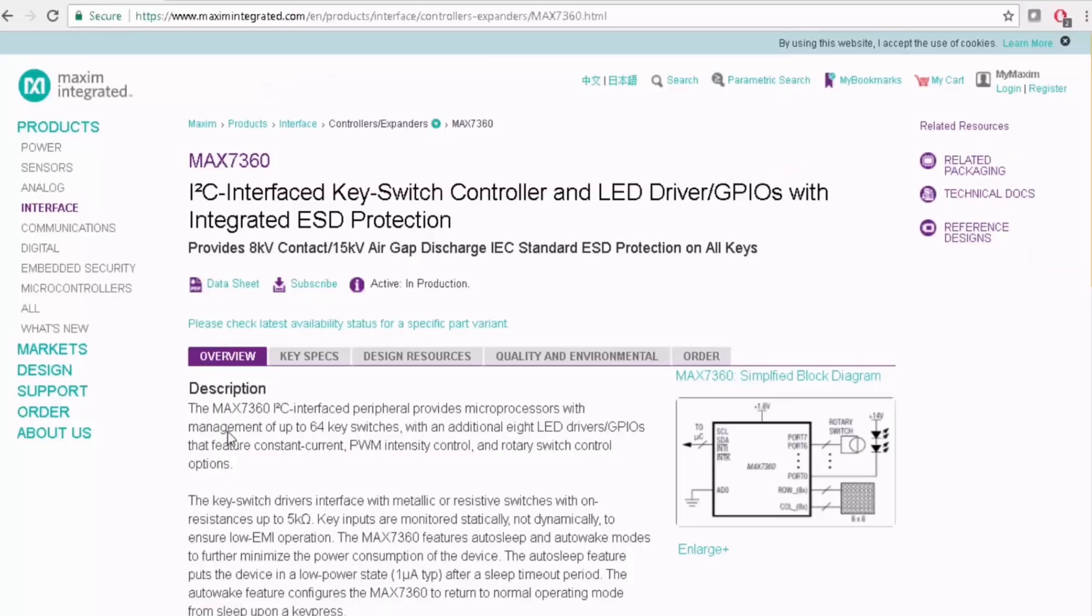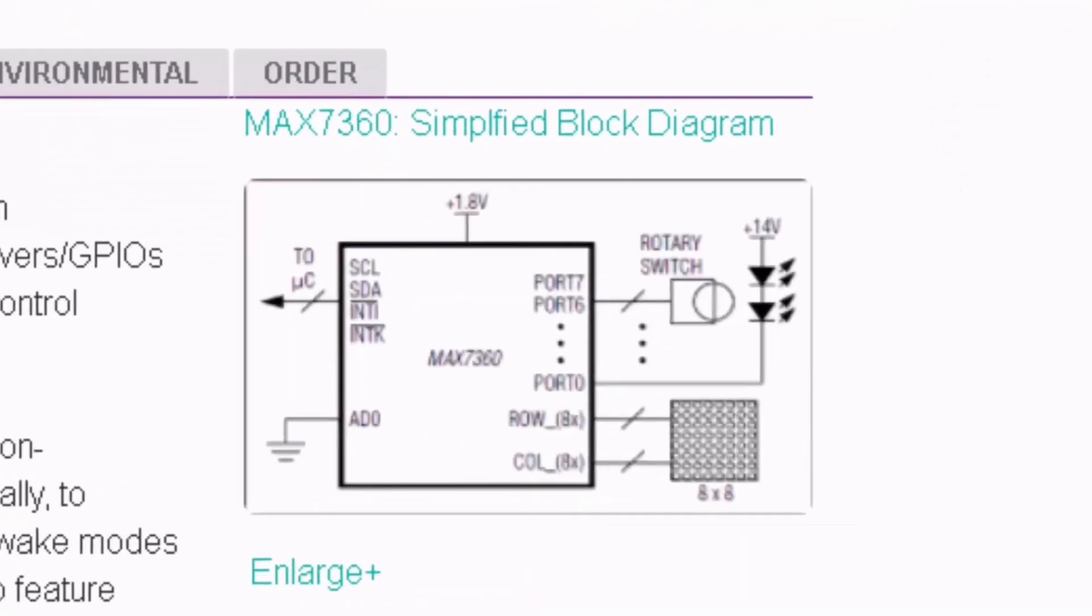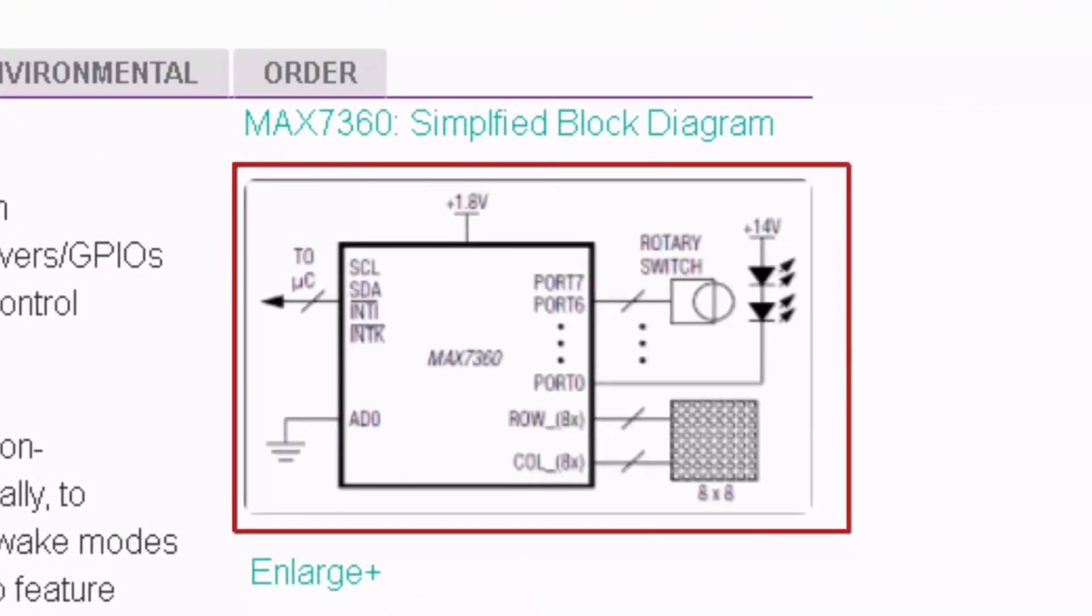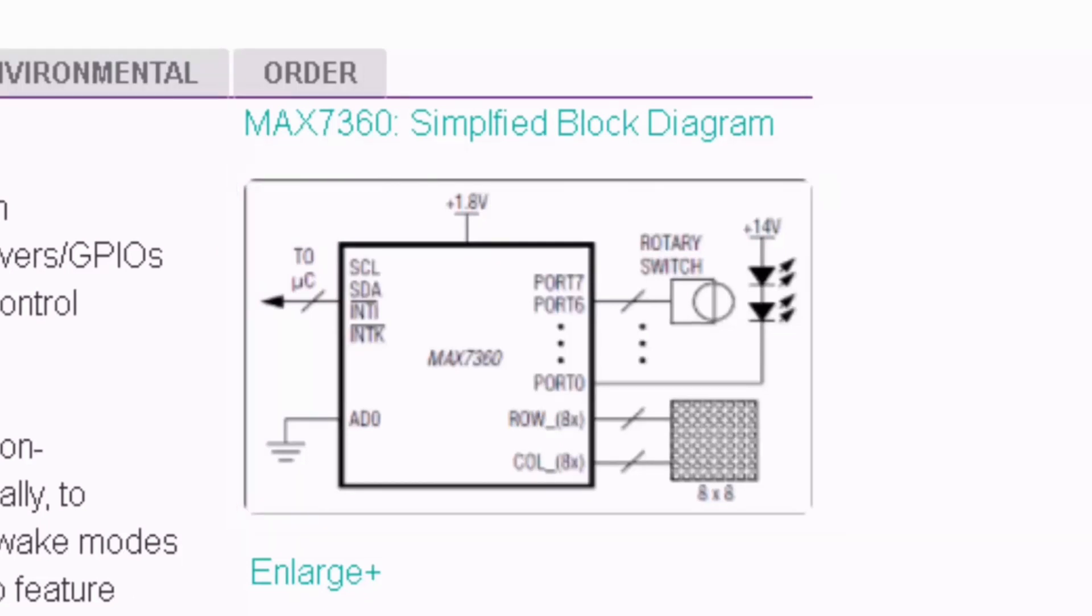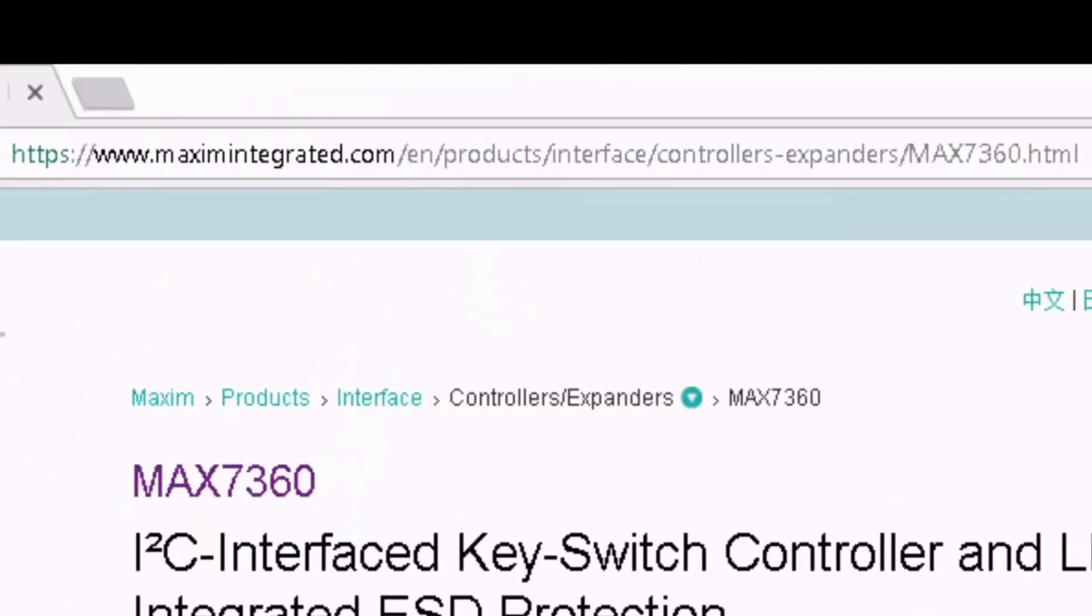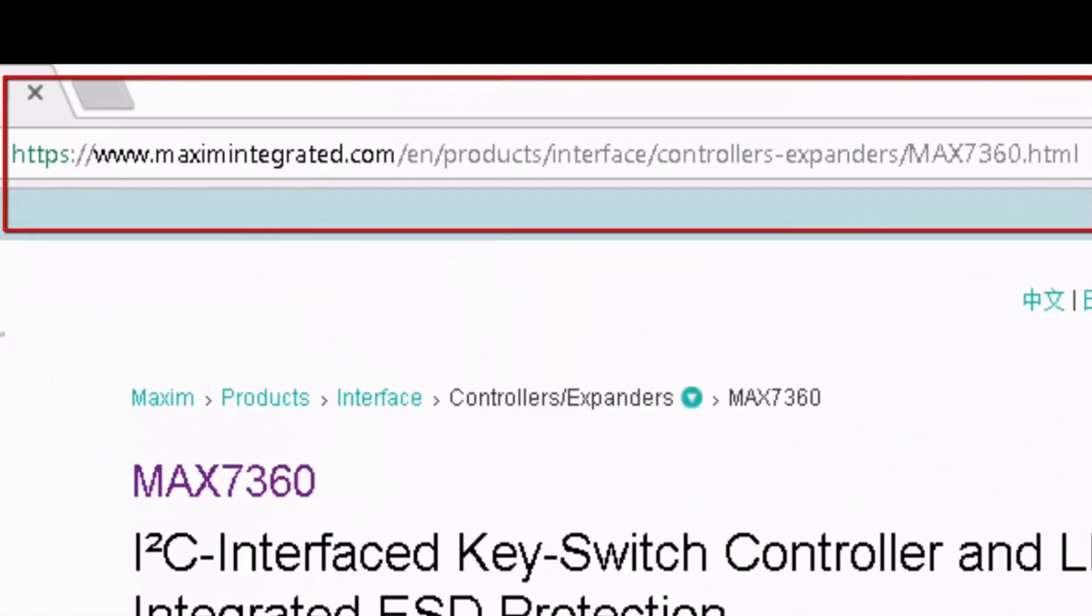Well, Maxim has a solution for this. MAX7360 is an I2C interfaced key switch controller which can manage up to 64 switches and a rotary encoder and communicates to the microcontroller through I2C interface. Please go through the datasheet in the following link for more detailed operation of MAX7360.